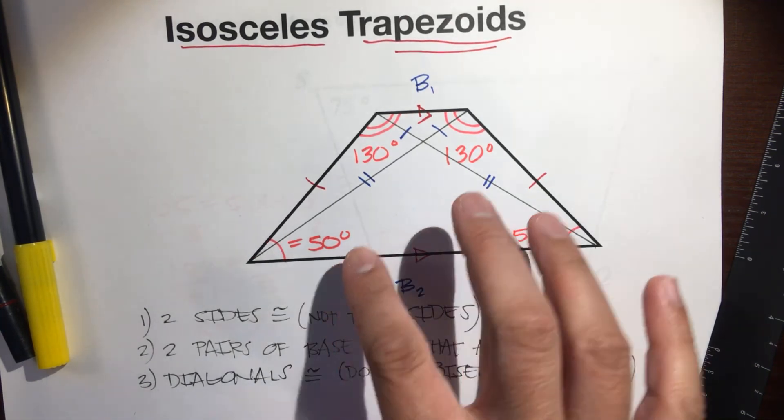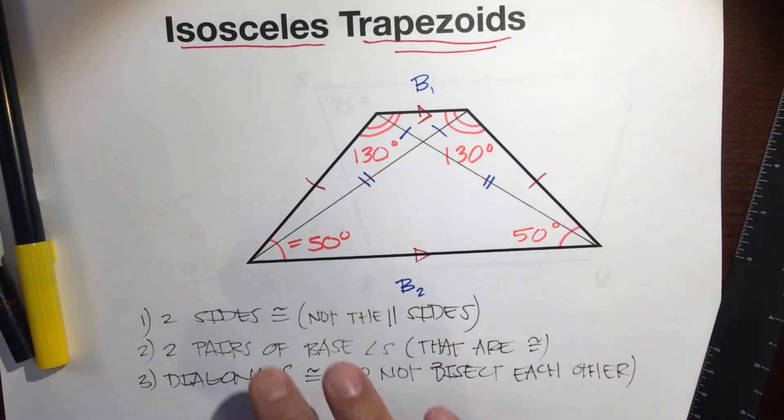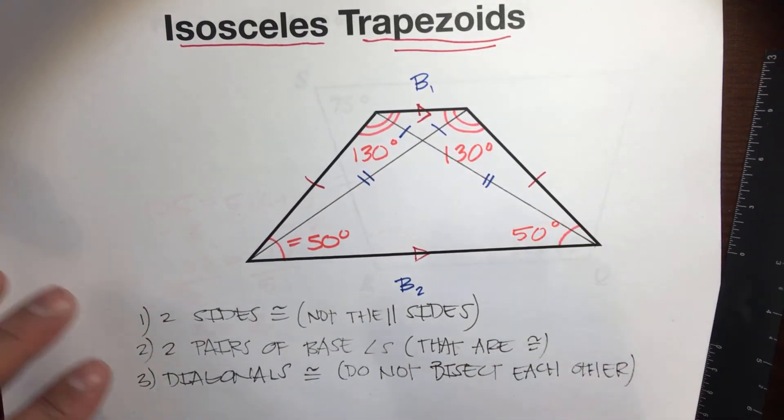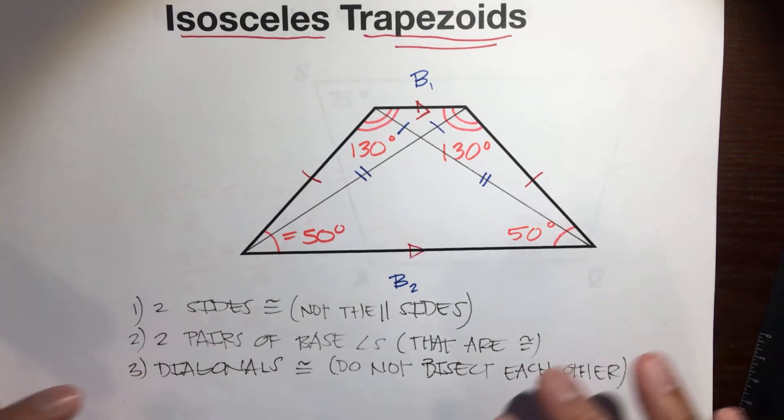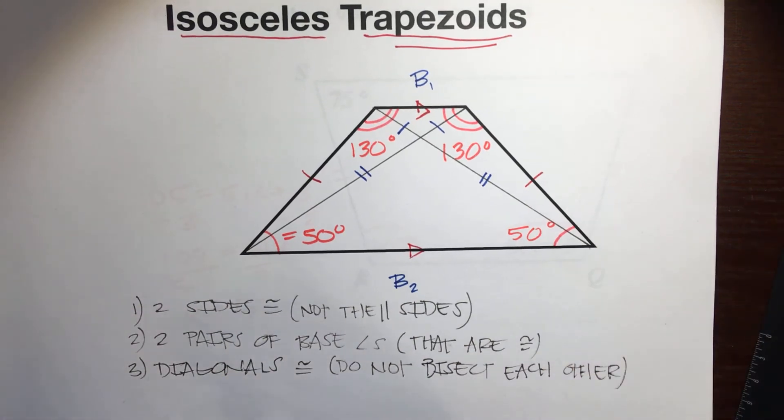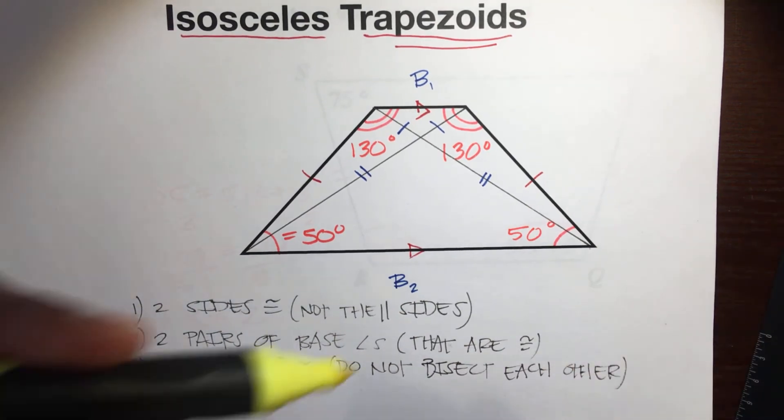So there are your three facts: diagonals are congruent but do not bisect each other; two pairs of base angles are congruent; two sides are congruent — and not the parallel sides. Make sure to highlight that in your notes.